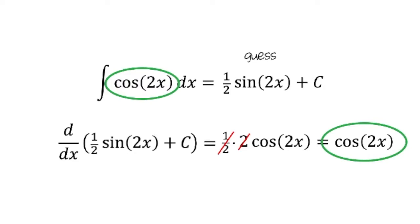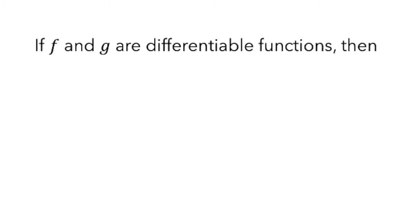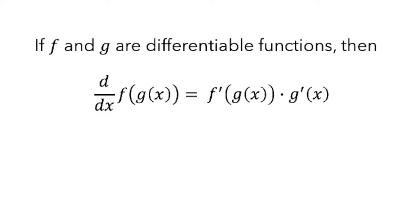We were able to do this because the argument of this composite function was just 2x. However, our method of guessing and adjusting might not be so straightforward with more complicated composite functions. To understand how we can integrate some types of more complicated functions, we can think about the chain rule.